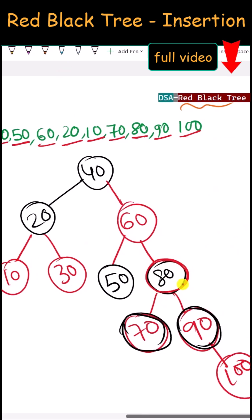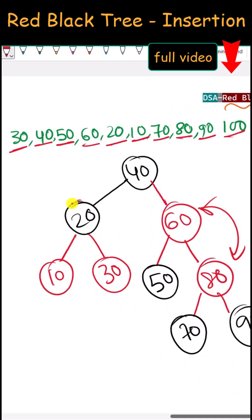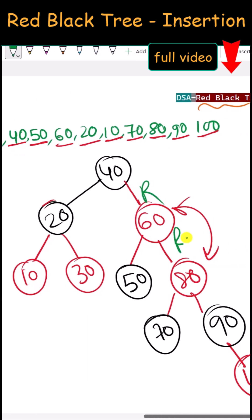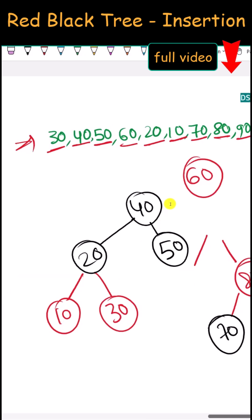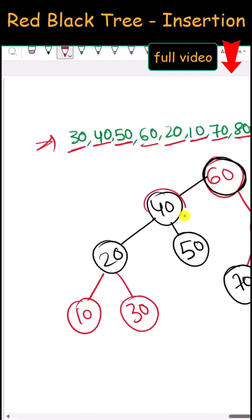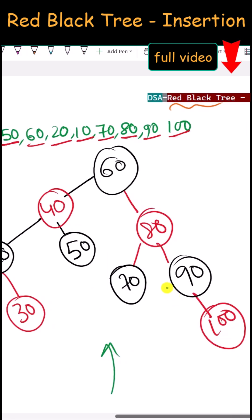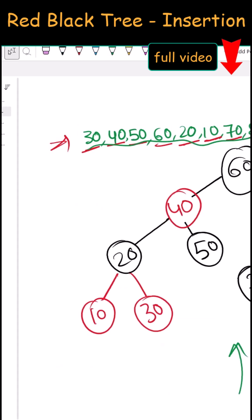For 100, we have a red uncle, so we recolor the parent and uncle to black and the grandparent becomes red. But now we have a red-red problem again. Since the uncle is black, we perform a left rotation: node 60 becomes black and node 40 becomes red. And we are done with the insertion.